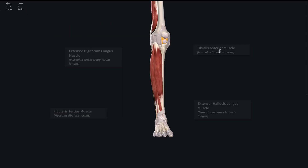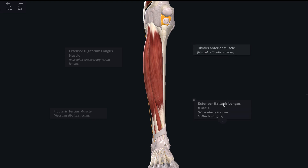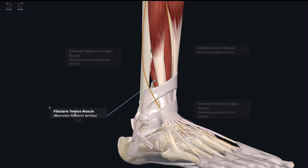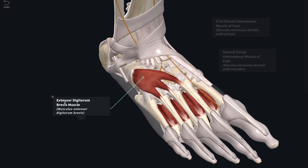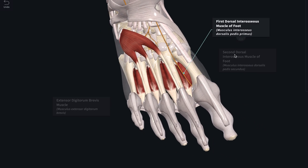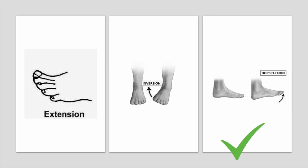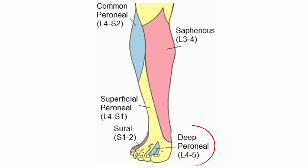The deep fibular nerve supplies the anterior muscles of the leg: tibialis anterior, extensor hallucis longus, extensor digitorum longus, and fibularis tertius. In addition, it supplies the extensor digitorum brevis and the first two dorsal interosseous muscles in the foot. Collectively, these muscles dorsiflex the foot at the ankle joint, extend the toes, and invert the foot. The deep fibular nerve also supplies general sensory branches to the skin on the adjacent dorsal sides of the first and second toes, and to the web space between them.